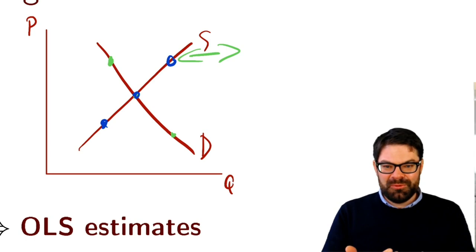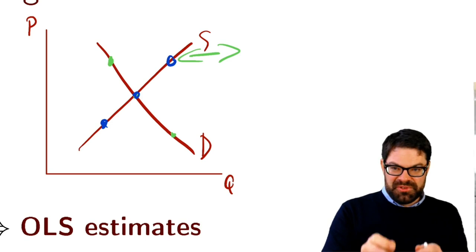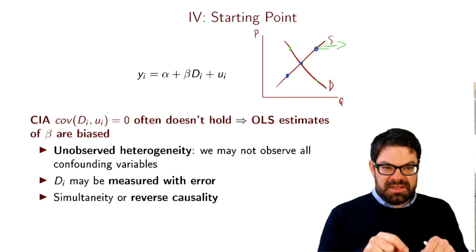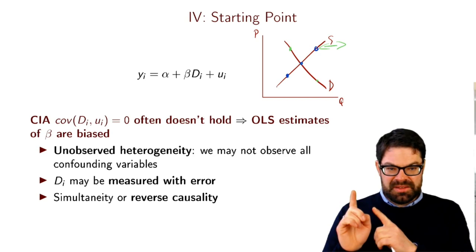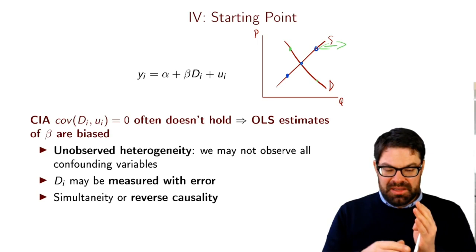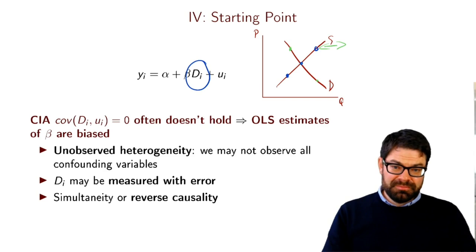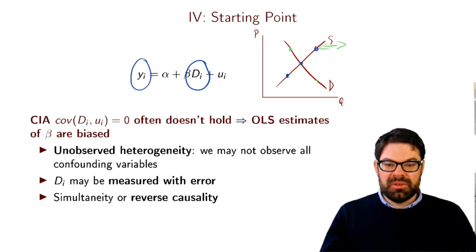This is where IVs initially came from — what one can call structural econometrics, where you want to estimate economic relationships that come directly from theory. However, researchers in the last 30 years have also used instrumental variables for causal inference that may not relate to economic models like the simple one shown here. The way they rather think about it is that you have a treatment D_i and an outcome: D_i is a policy or policy change and Y is an outcome that you want to study.